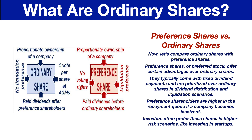Now, let's compare ordinary shares with preference shares. Preference shares, or preferred stock, offer certain advantages over ordinary shares. They typically come with fixed dividend payments, and are prioritized over ordinary shares in dividend distribution and liquidation scenarios. Preference shareholders are higher in the repayment queue if a company becomes insolvent.